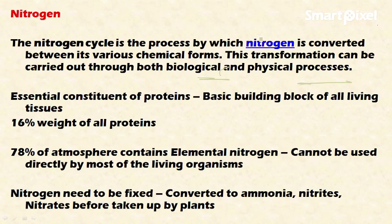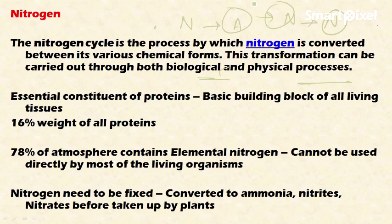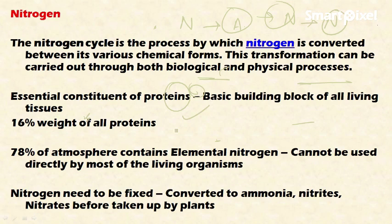The nitrogen cycle involves elemental nitrogen present in the atmosphere being converted into ammonia, then into nitrites, and then into nitrates by various microorganisms present in the soil. Nitrogen is important for living beings because it is an essential constituent of proteins, and protein is the building block of all living tissues. Nitrogen accounts for 16% of the weight of all proteins.